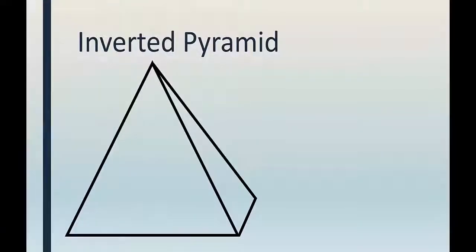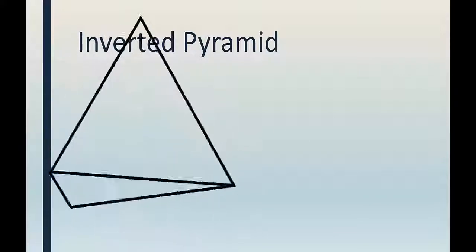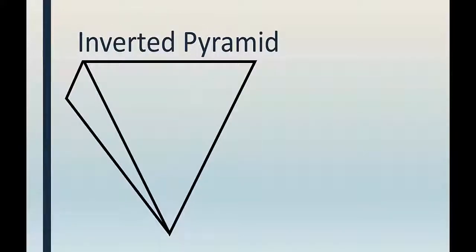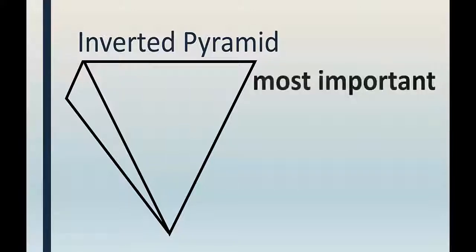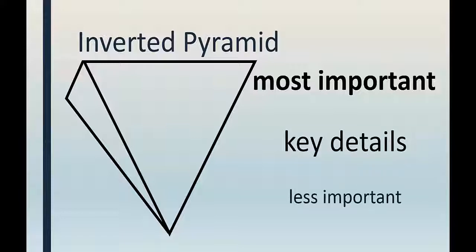You probably know what a pyramid looks like. So what does inverted mean? It means upside down. The biggest part of the pyramid is at the top. If we think of a news article as an inverted pyramid, it means that the biggest part — the most important information — comes first, or at the top. Then the key details follow, and the article ends with background information or less important details.